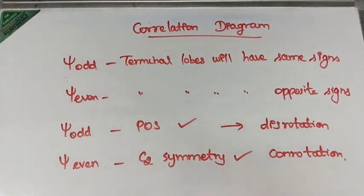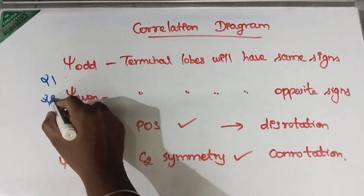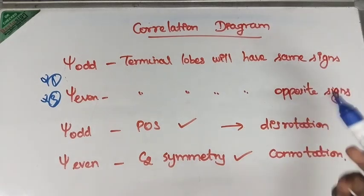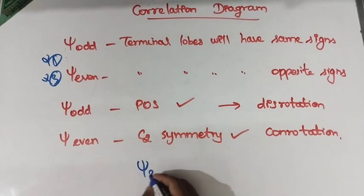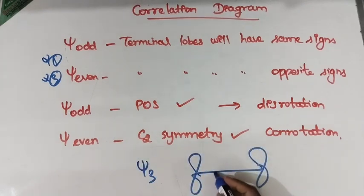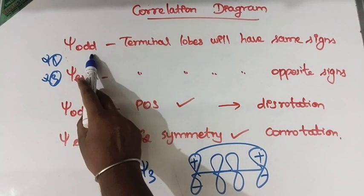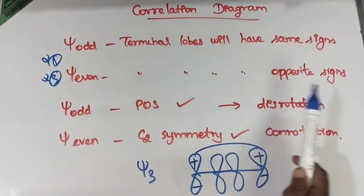Before going to the correlation diagram you must know the basic concepts. First, as I told you in the previous video, psi odd — for example psi 1 or psi 3 — whenever you have psi odd, the terminal lobes will have the same signs. But if psi is even, then the terminal lobes will have opposite signs.